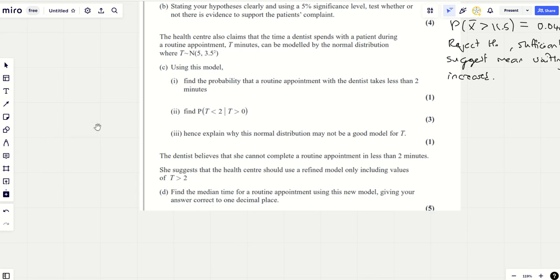Part C, this is where it starts getting harder because conditional probability with a normal distribution is difficult. The health centre also claims that the time a dentist spends with a patient during a routine appointment, T minutes, can be modelled by this normal distribution. Find the probability that a routine appointment with a dentist takes less than two minutes. This is once again just can you use the calculator.